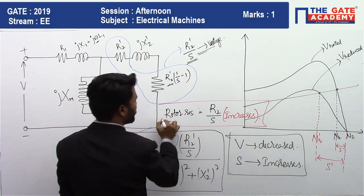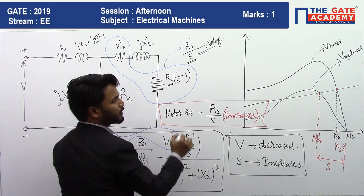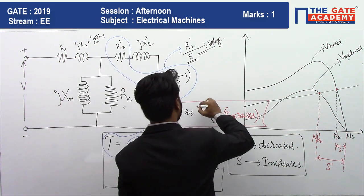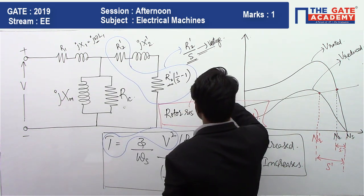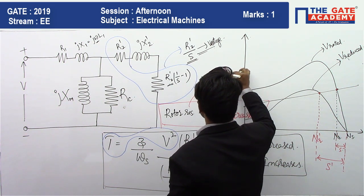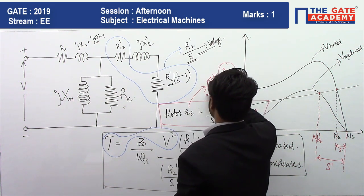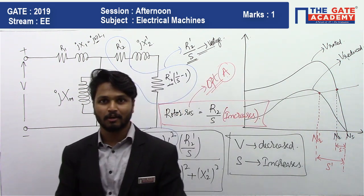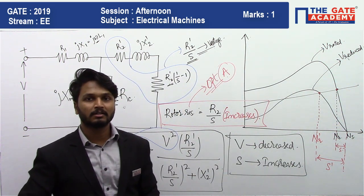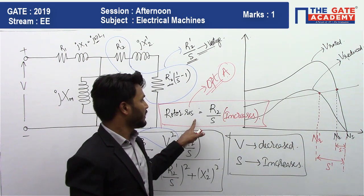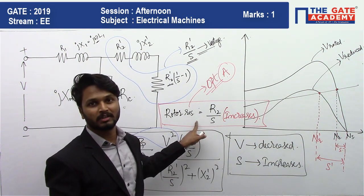Therefore the only parameter that changes is the rotor resistance R2 dash / S, and the correct answer for this question is Option A. All other factors — magnetizing reactance, leakage reactances, stator resistance — are independent of voltage. Only rotor resistance is affected.